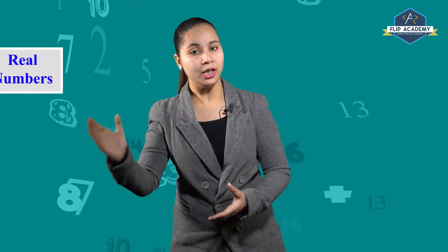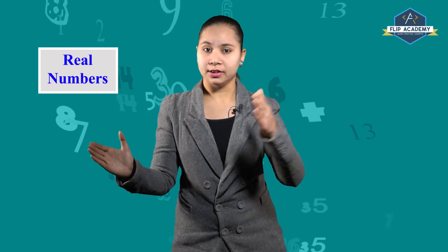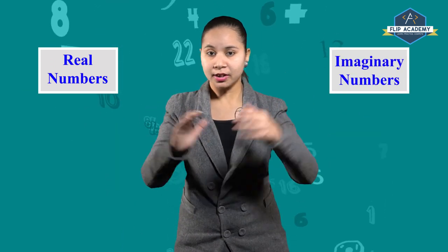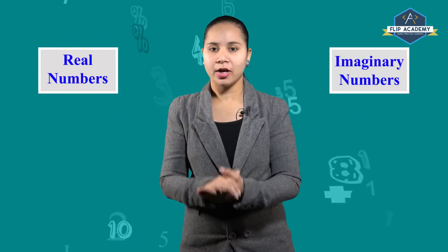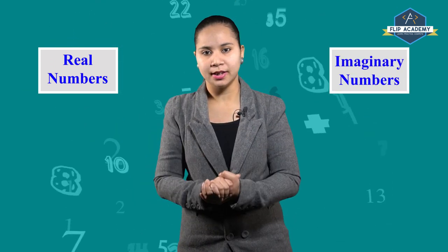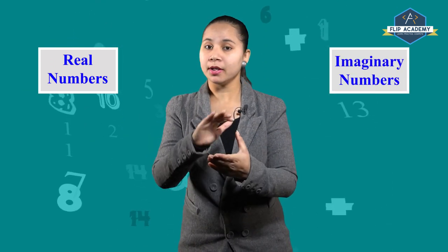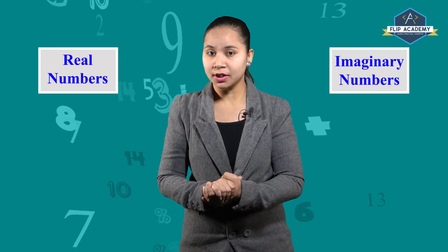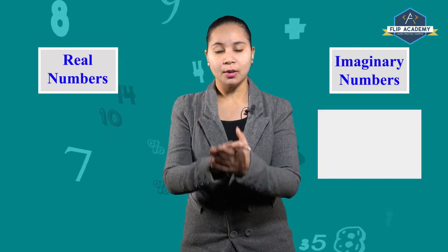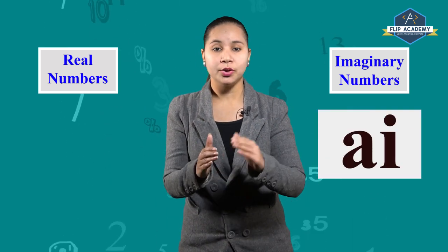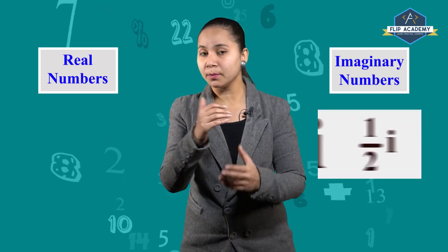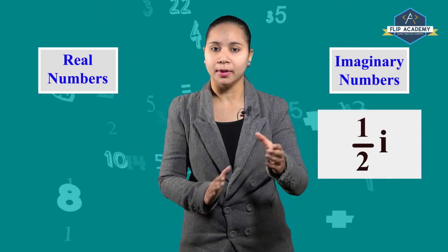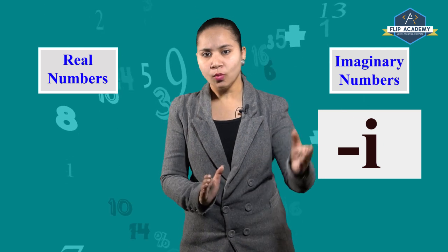Numbers are further classified into 2 categories. One is real numbers and the other is imaginary numbers. Imaginary numbers — what are they? For example, i, 2i, 1/2 i, minus i.